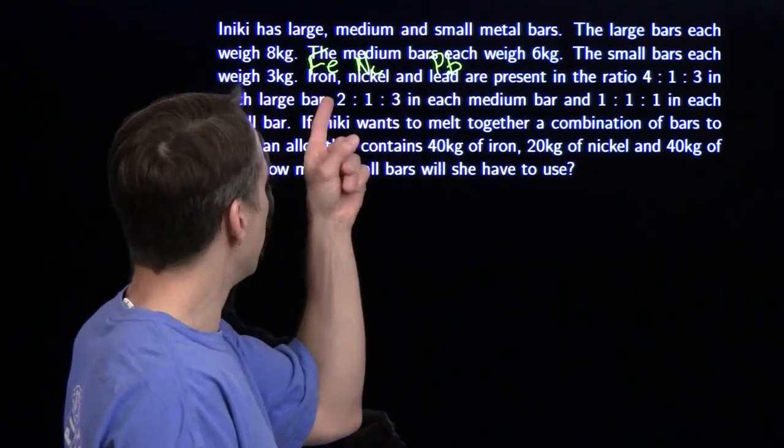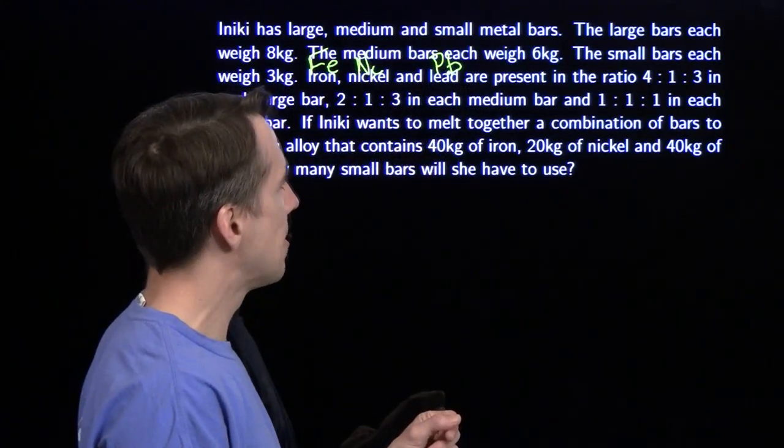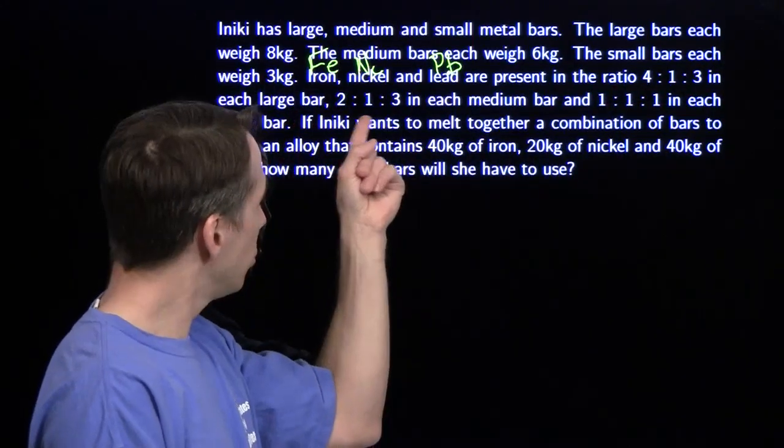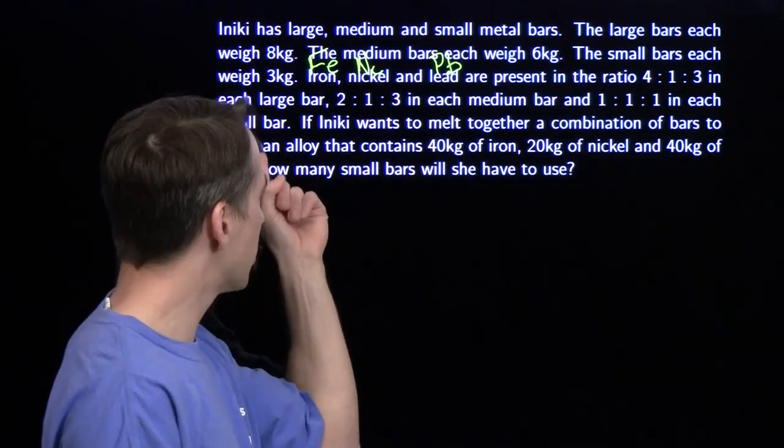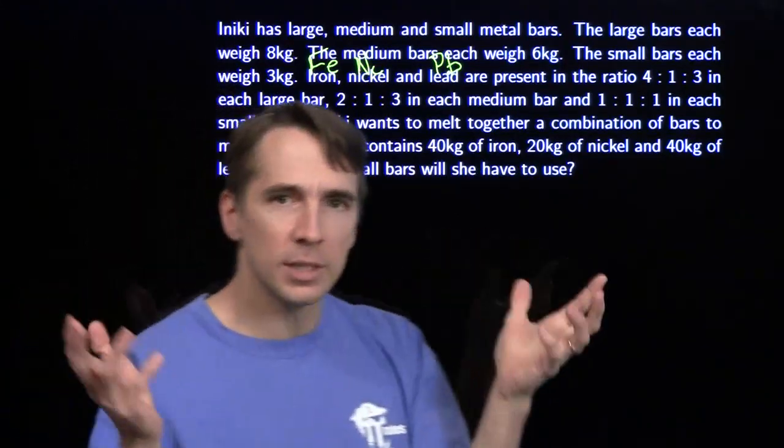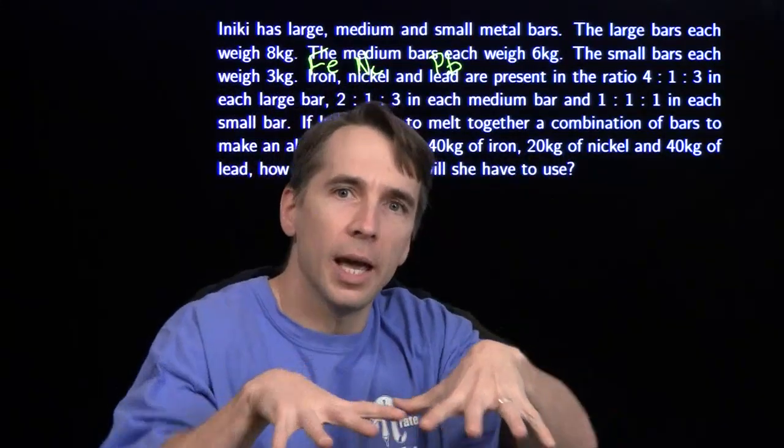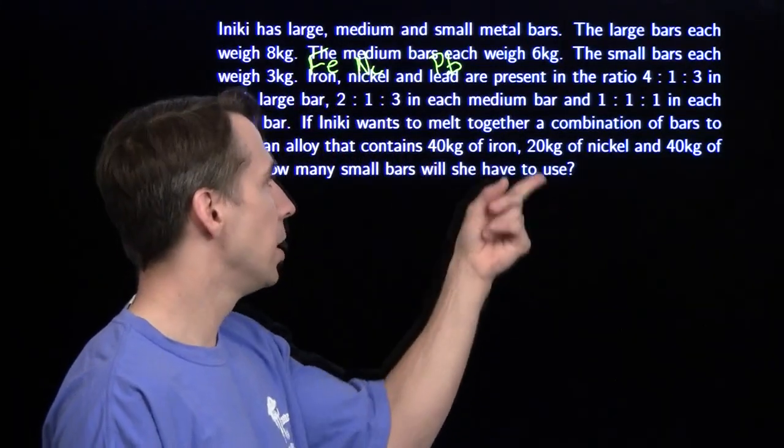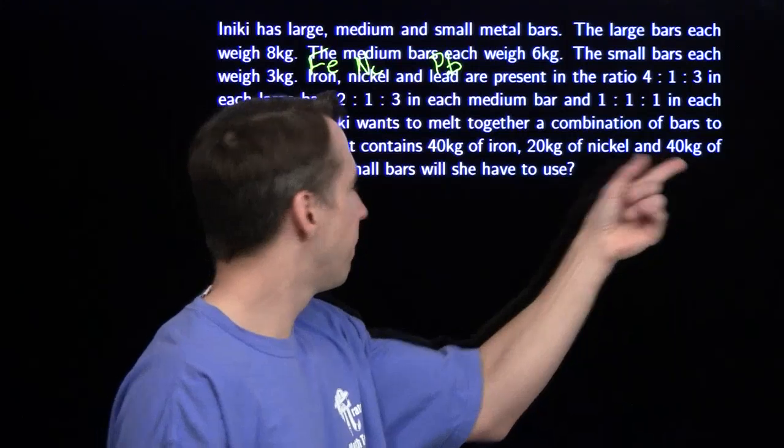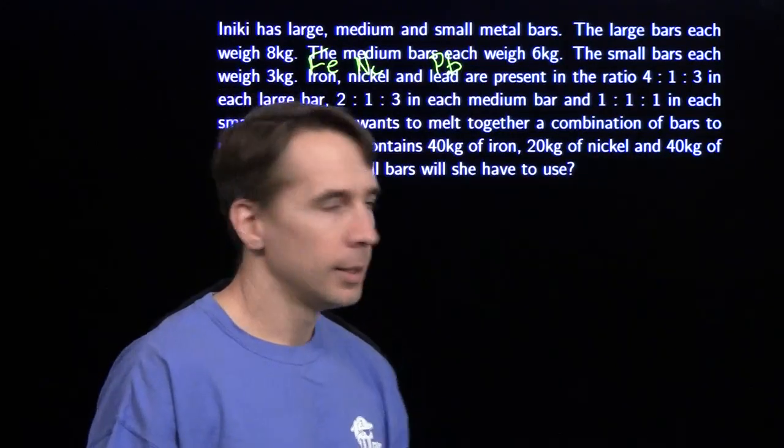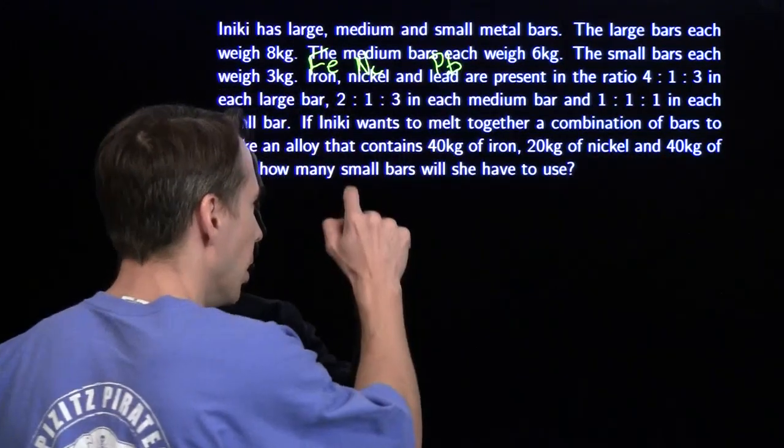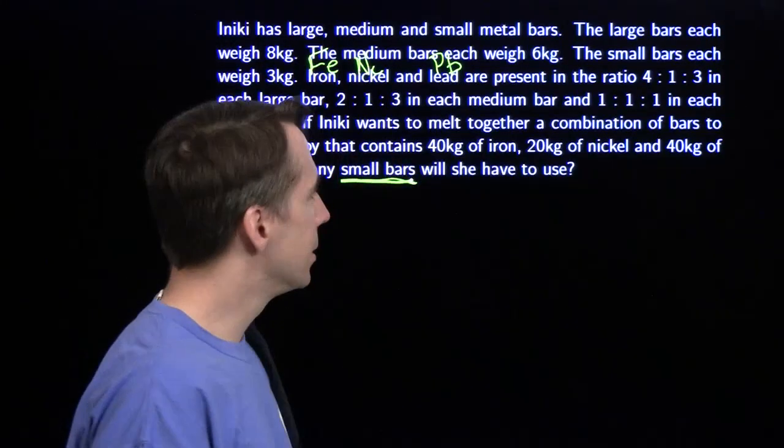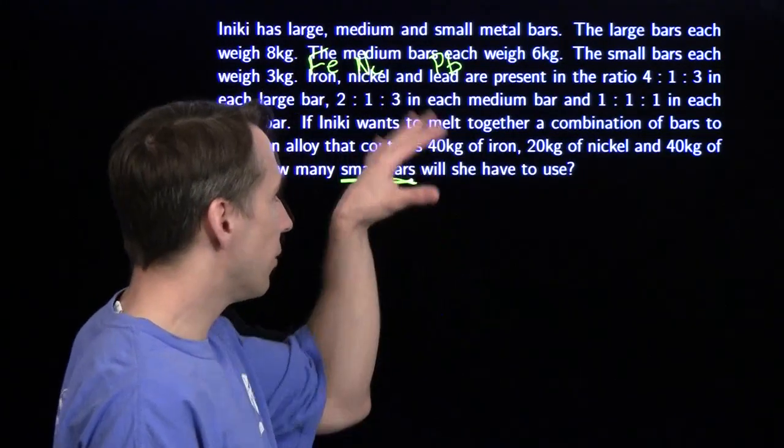We have iron, nickel, and lead present in the ratio of 4:1:3 in each large bar, 2:1:3 in each medium bar, and 1:1:1 in each small bar. Nikki wants to take a bunch of these bars, melt them all together, and make a mixture that's 40 kilograms of iron, 20 kilograms of nickel, and 40 kilograms of lead. We're going to figure out how many small bars.